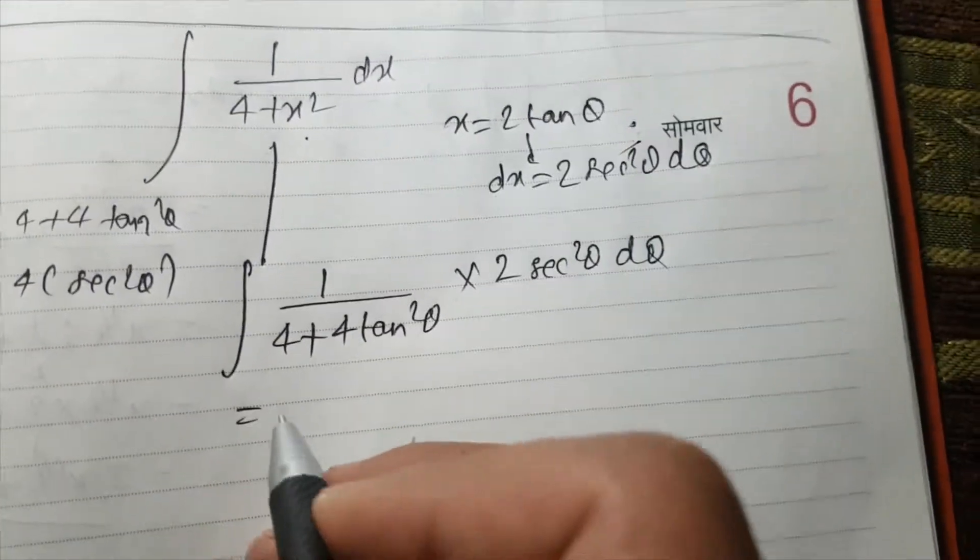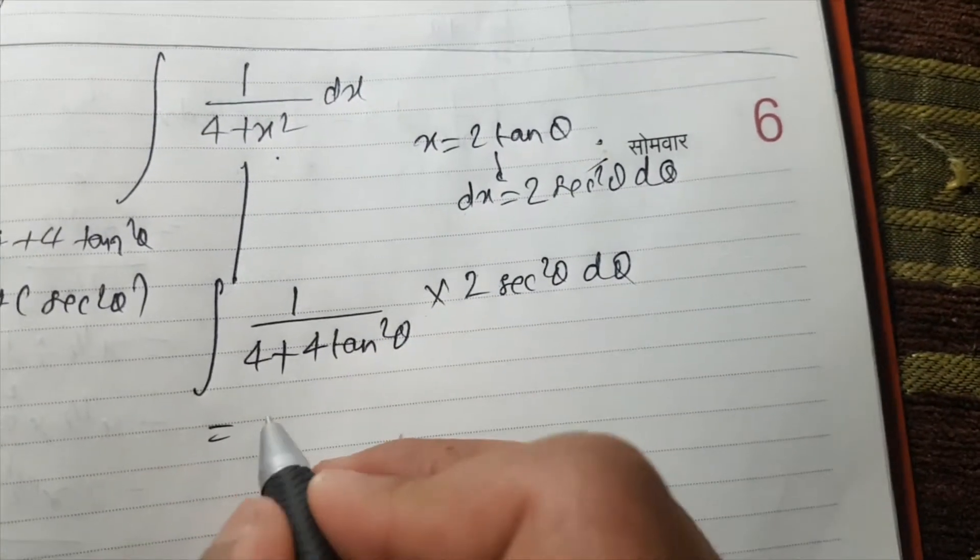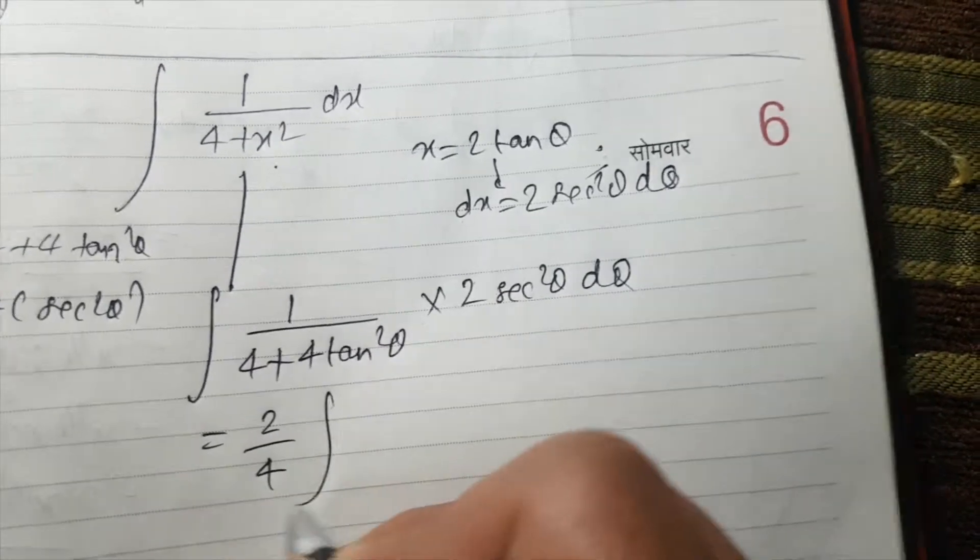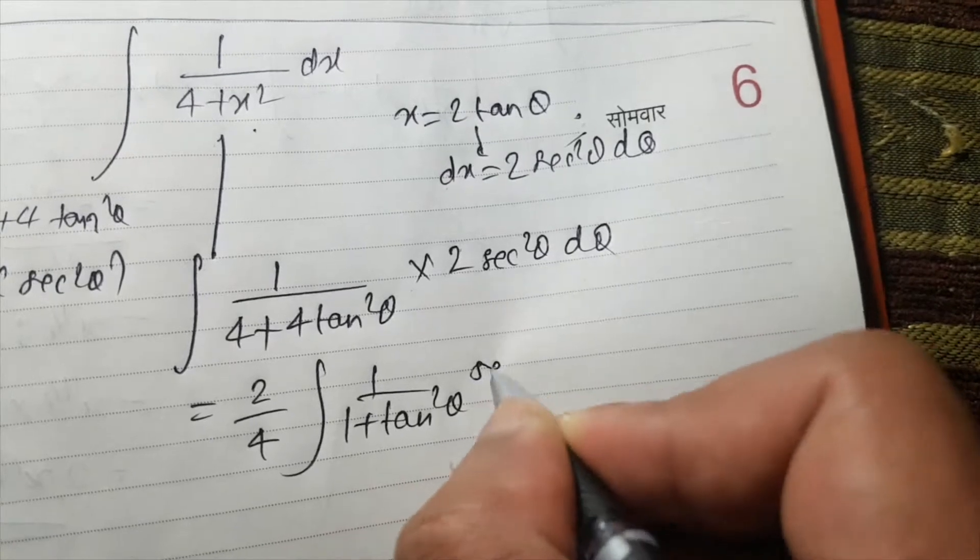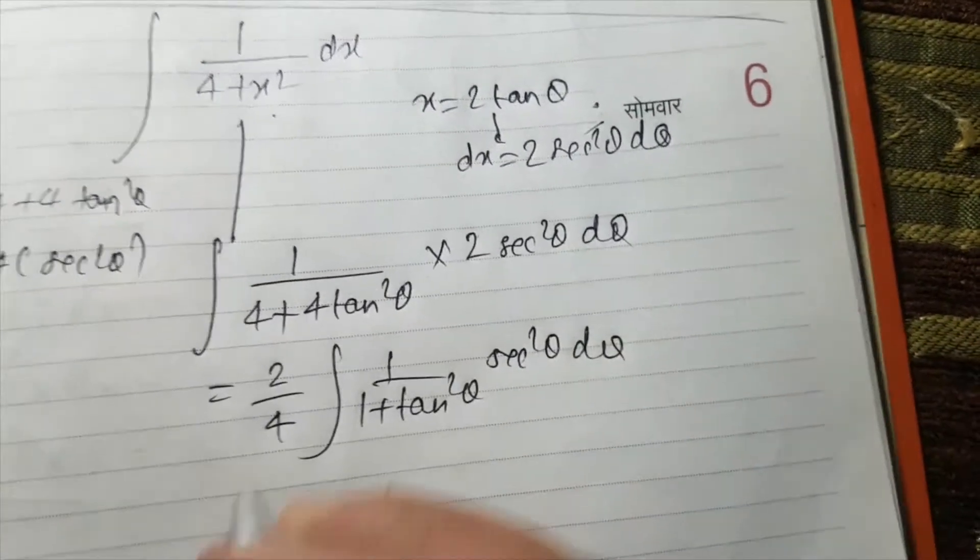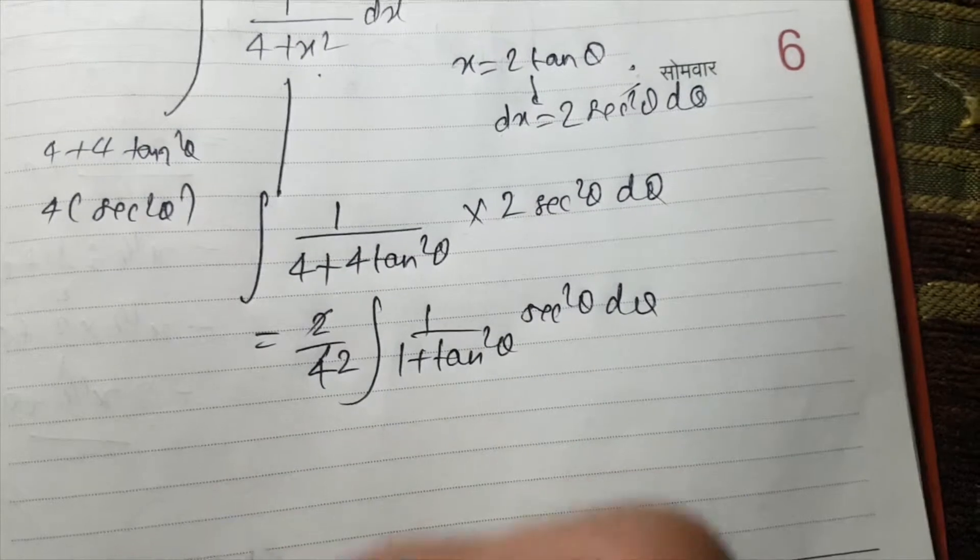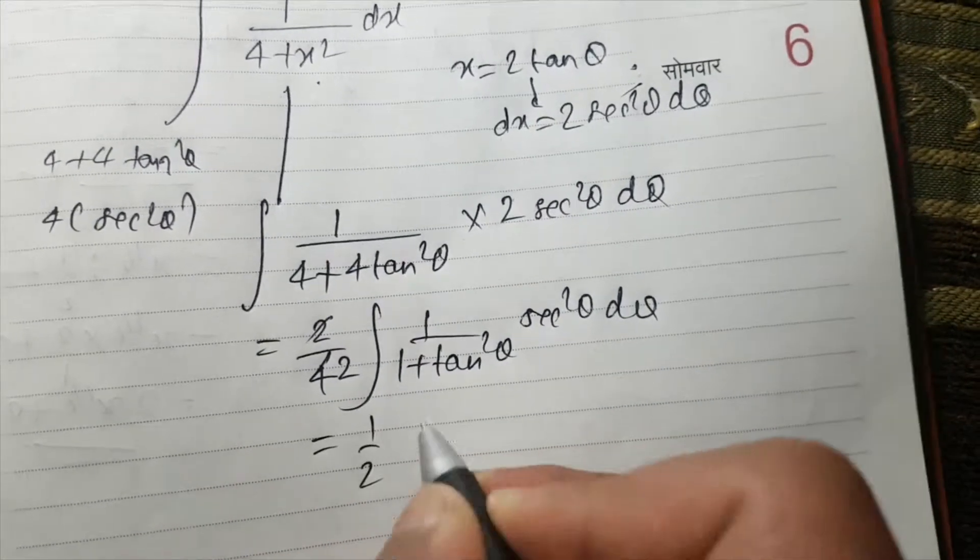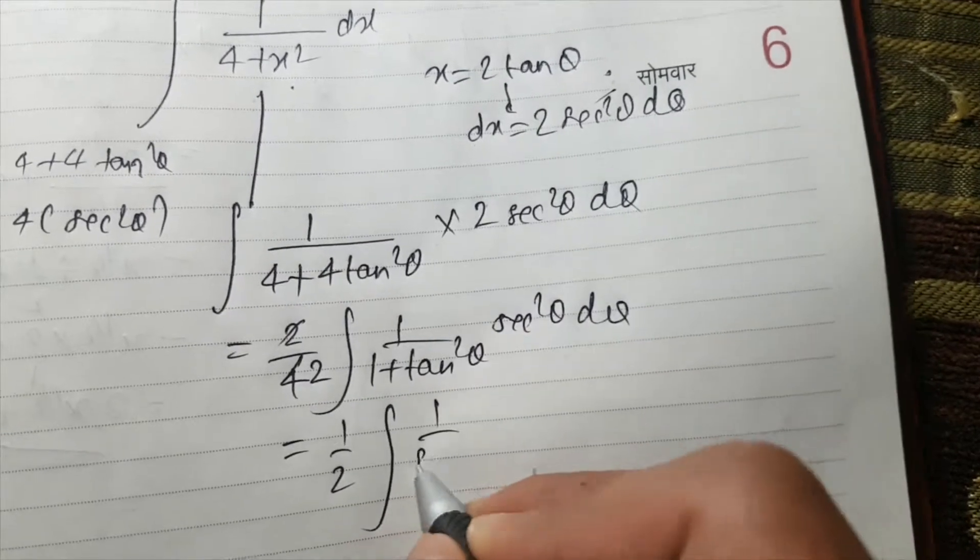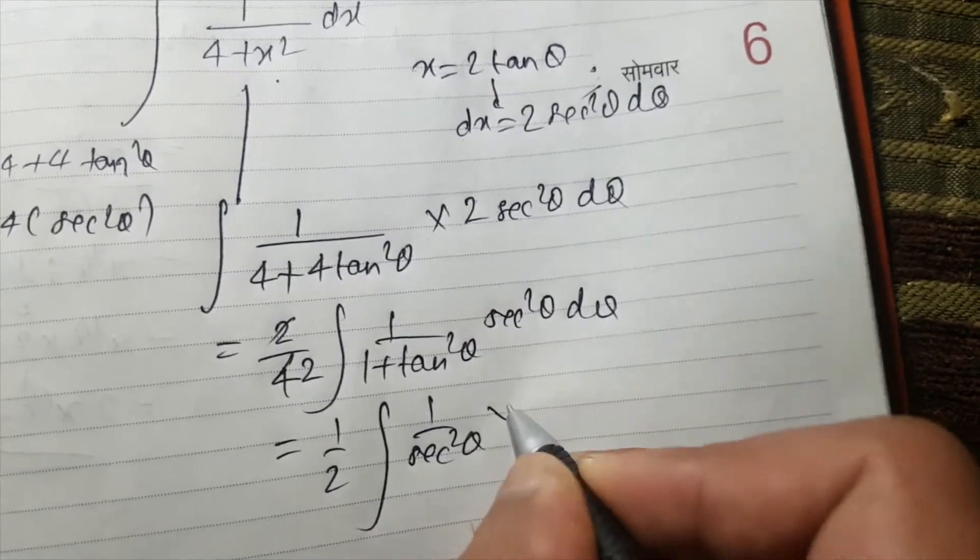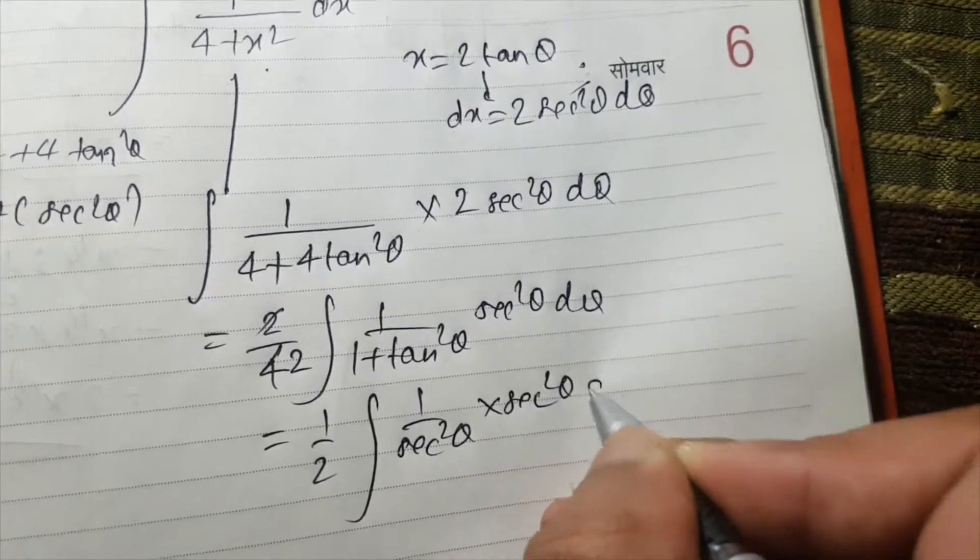I will factor out 4 from here and 2 from here. 2 upon 4 integral of 1 upon 1 plus tan square theta into sec square theta d theta. Now I will cut it, it will become half. Then 1 upon 1 plus tan square theta is, we know it is sec square theta into sec square theta d theta.